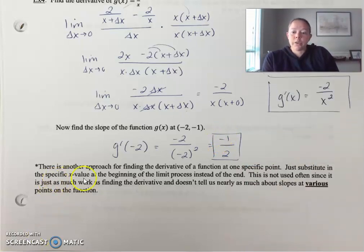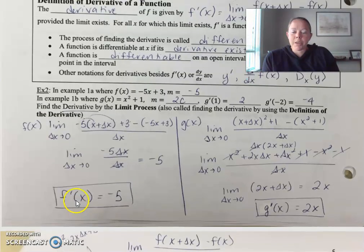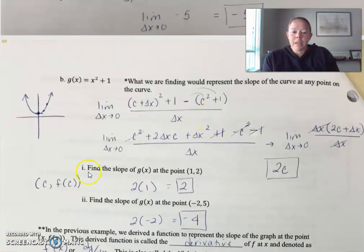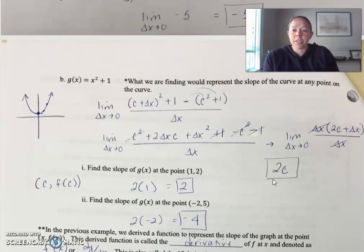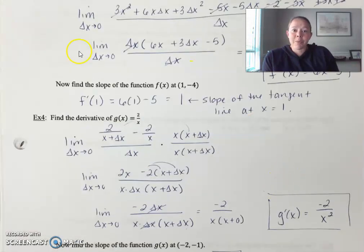There is another approach for finding the derivative at one specific point: substitute the specific x-value at the beginning of the limit function instead of at the end. This is not used often, since it's just as much work as finding the full derivative and doesn't tell us nearly as much about slopes at various points. You'll definitely need to practice the algebra behind all of these, so make sure you're doing your homework and email me if you have any questions.